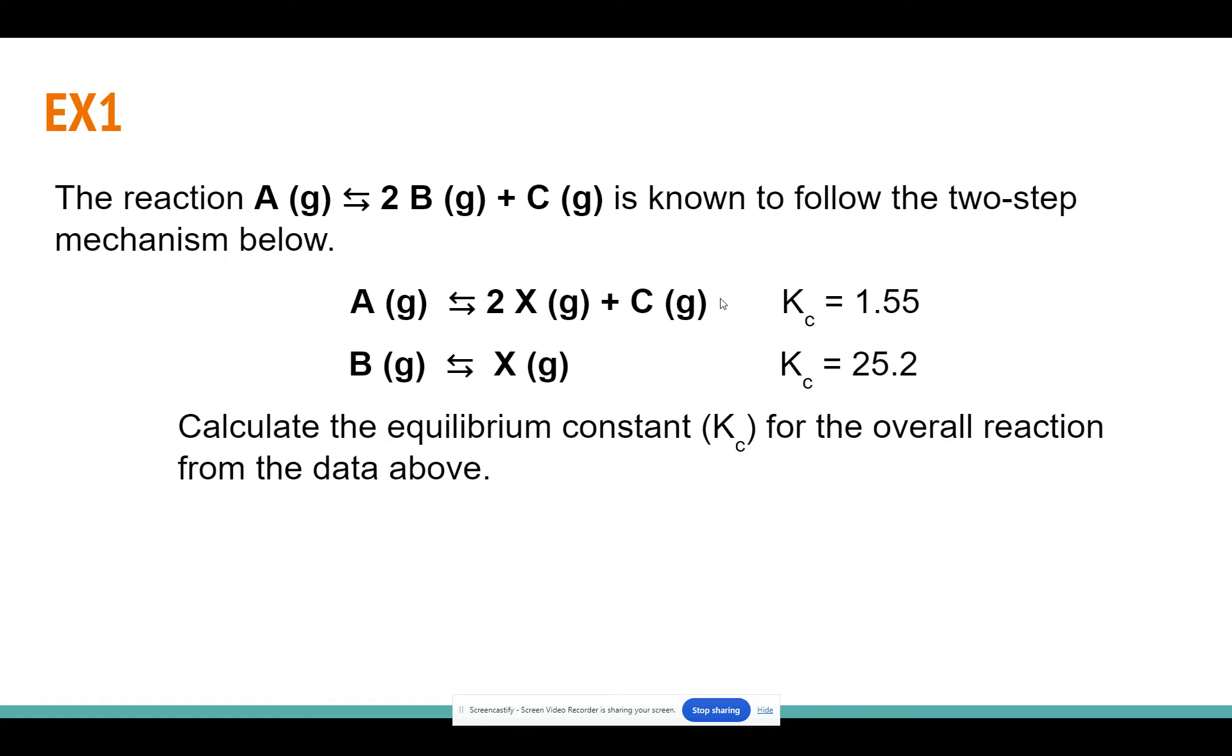So we have a reaction: A gas in equilibrium with two B gas molecules and C gas. And it's known to follow the two-step mechanism below. So we have these two steps. When we're trying to work this out, what we need to focus on doing is finding and getting each of these substances from our overall reaction. I'm actually going to highlight these so that we can keep track of them a little bit better. And we're just trying to cancel and combine these partial reactions in order to get this overall reaction.